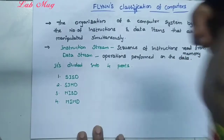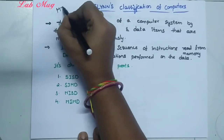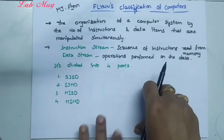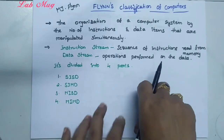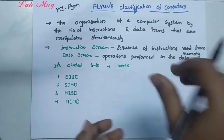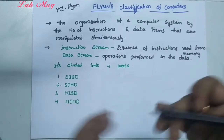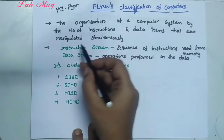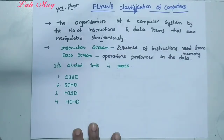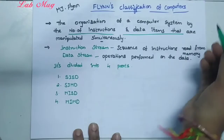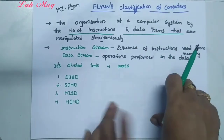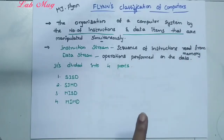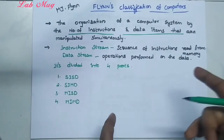Here, MJ Flynn, a scientist, proposed a classification. That classification organizes a computer system by the number of instructions and data items it manipulates simultaneously — meaning both instructions and data items work simultaneously.